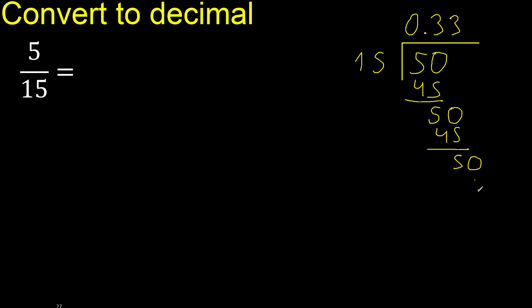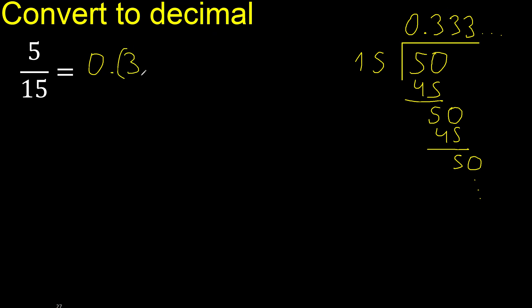Therefore repeat — 3 repeats. Therefore the answer is 0 point 3 repeating, like this: 3 repeat. Finish.